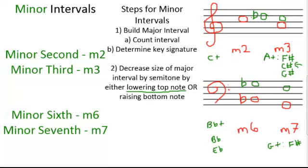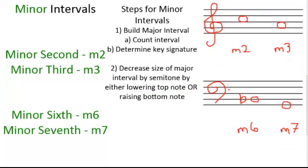Those are our ascending minor intervals. Now we're going to try a few examples with descending minor intervals, meaning we're counting down from the top note. It's slightly different. Our first step is the same though — we need to build the major interval going down. So we take our top note C, count down C to B, and there's our first step. Now the second step is a little trickier. In order to do this second step, we need to do a little bit of trial and error. The bottom note gives us the key signature, but since we don't know what the bottom note is, we don't know which key signature it will be.